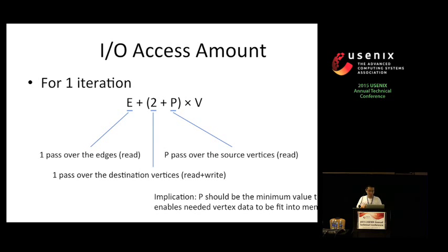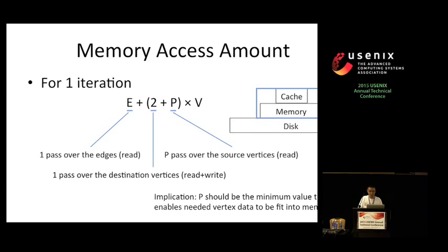From the above procedures, we can see that we only require one pass over the edges, P passes over the source vertices, and one pass over the destinations to complete one iteration. Thus, the overall amount will be like this formula. Just want to mention again that this applies not only to out-of-core situations, but also in-memory ones. Also, we can get an implication that P should be the minimum value that enables the required vertex data to be fitting to memory.